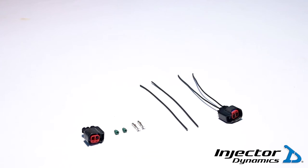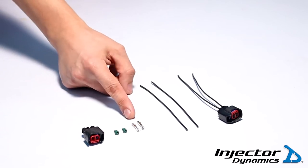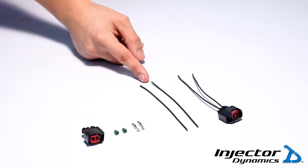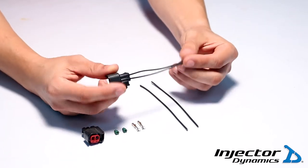What you see before you is a US car connector kit that comes standard with every set of Injector Dynamics injectors. You have the US car connector body, the two seals, the two terminals, and then a pair of wire leads for demonstration purposes.